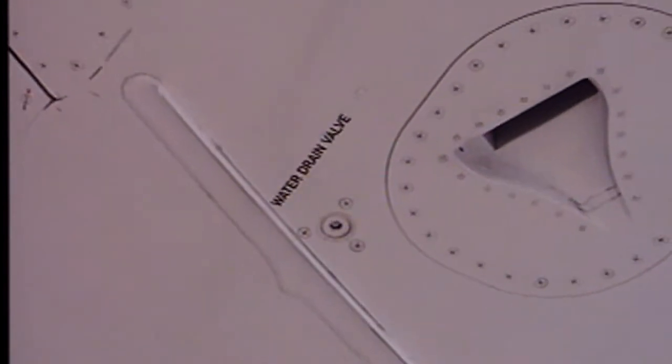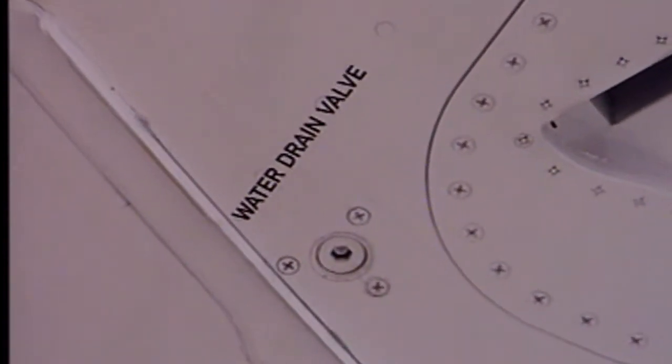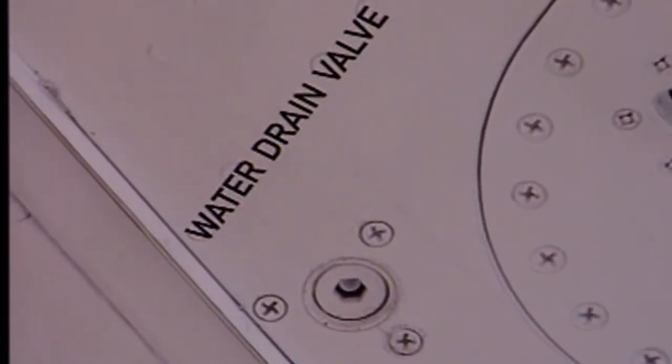For each wing, there is one water drain valve for the vent surge tank close to the NACA intake.